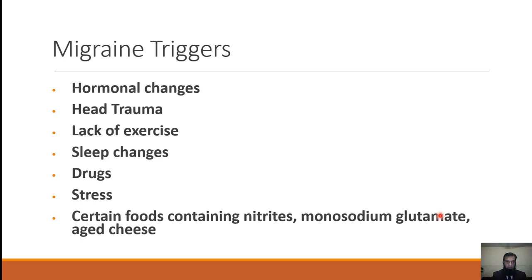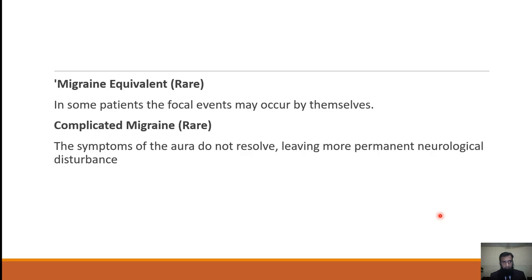Patients should be encouraged to develop avoidance behavior towards these migraine triggers. Acephalic migraine, also called migraine equivalent, occurs when a patient experiences only the aura without headache — focal symptoms appear but no headache follows. If the symptoms of aura do not resolve and result in permanent neurological deficits due to the aura, it is called complicated migraine, though these are rare entities.